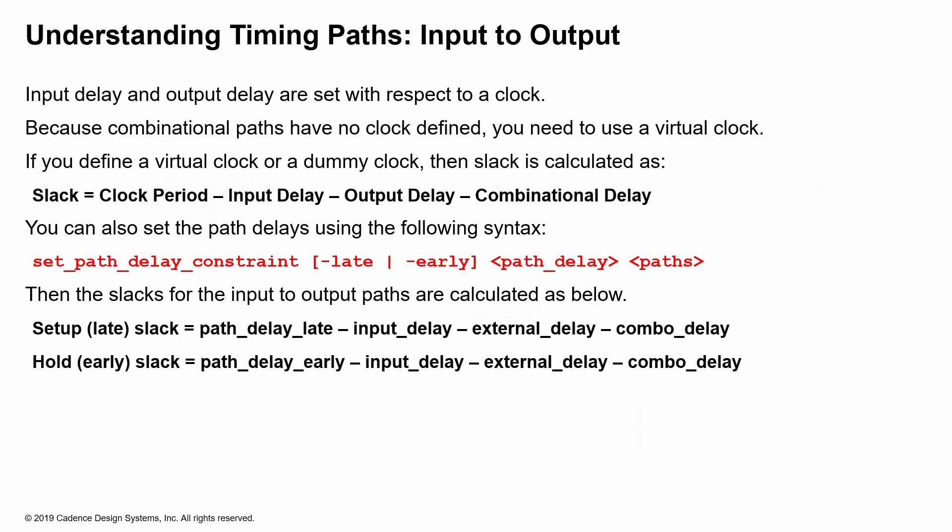For input-to-output paths, you can normally set input delay or output delay with respect to a clock. But because these paths don't have any clock defined, you need to use a virtual clock. This virtual or dummy clock then defines the slack for combinational paths by subtracting input delay, output delay, and combinational delay within the design from the clock period. You can also constrain these paths using a path delay constraint, specifying which paths to constrain and setting max or min delay.